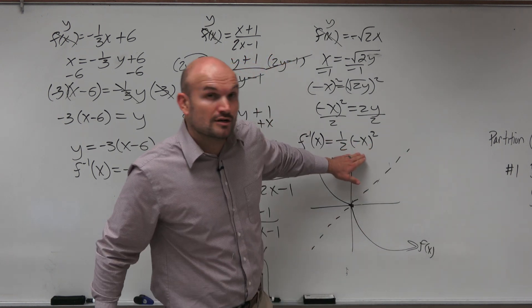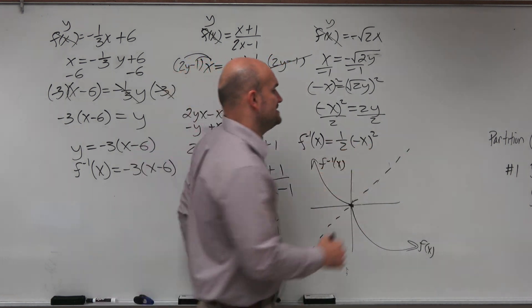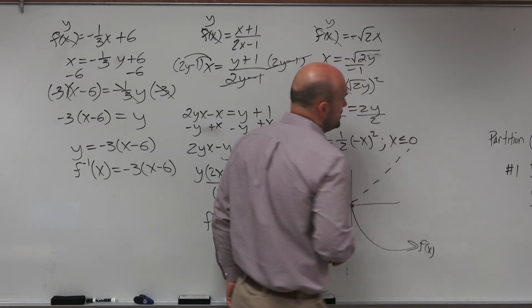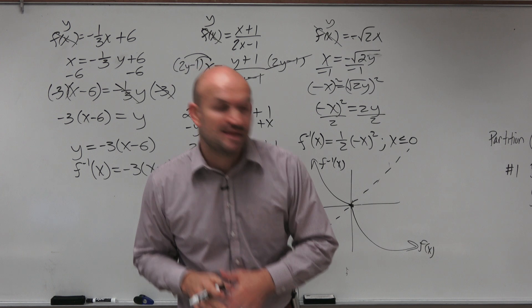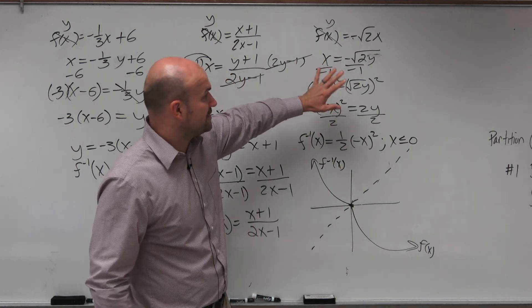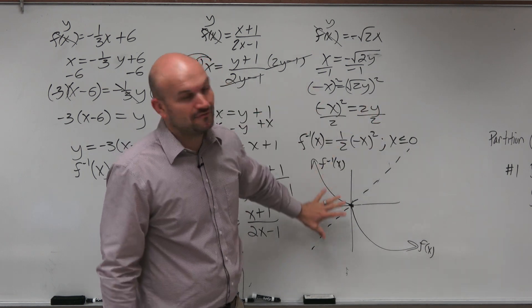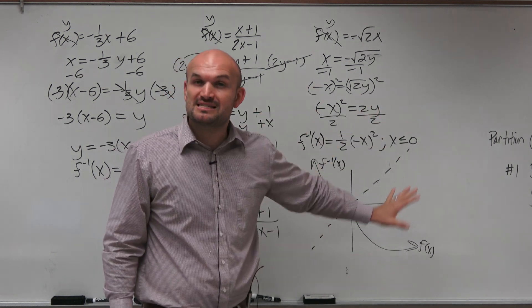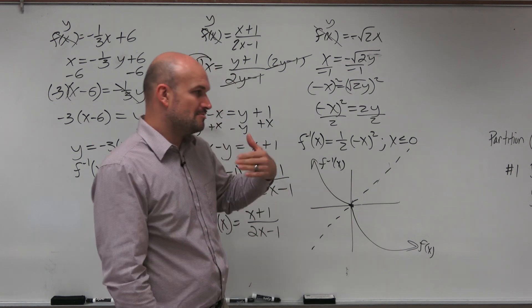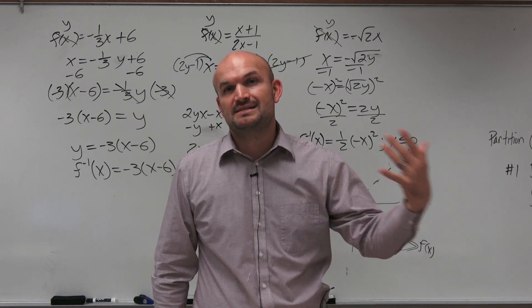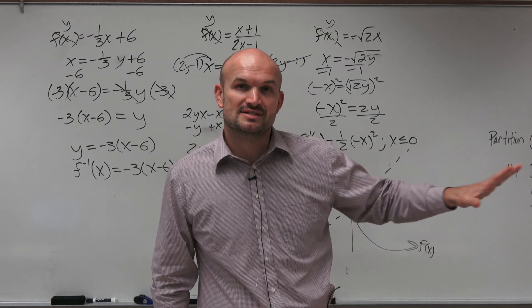So the answer, or the equation, is correct, but now we need to add our restriction, which is x has to be less than or equal to 0. So the third and final mistake that students will make is when we have a problem where there needs to be a restriction, they will forget to add the restriction. And again, it's very helpful to know the graphs, so you know when to expect that you need a restriction. Because remember, for a function to be invertible, it has to be one to one. It has to pass the horizontal line test.